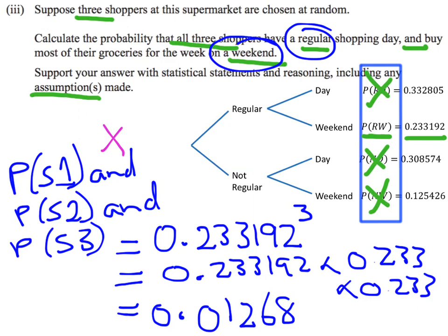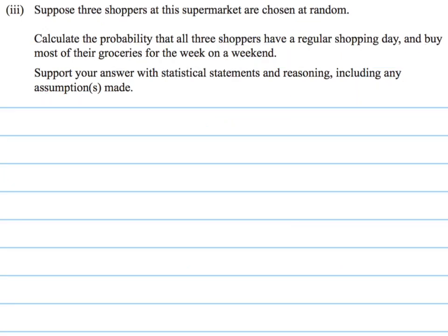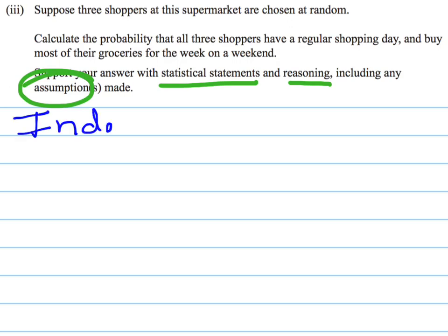That's the first part of the question — finding the probability for all three people. Now for the second part: we need to support the answer with statistical statements and reasoning, including any assumptions made. One of the key assumptions, whenever we talk about any kind of statistical model — whether it's a probability model, the normal distribution, or any other model — is independence.